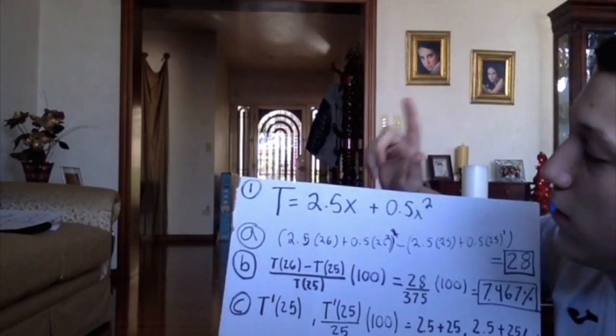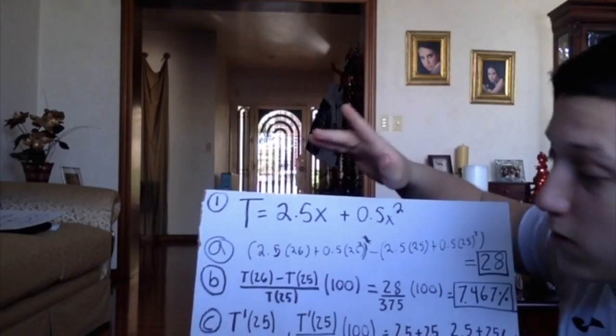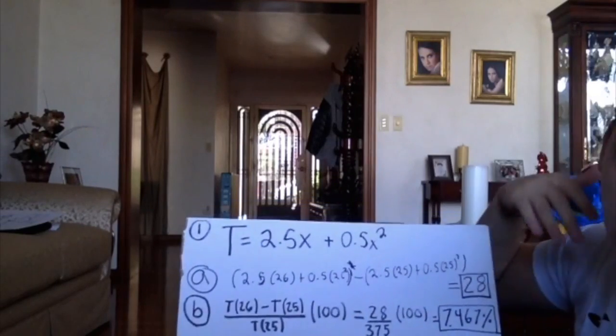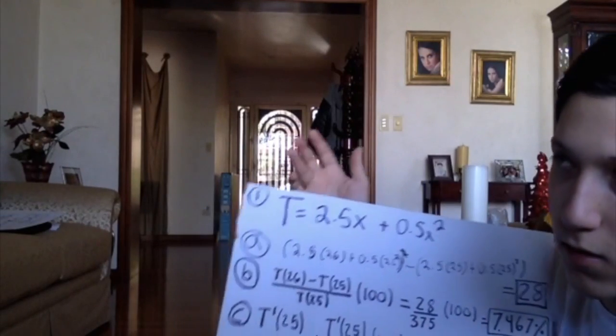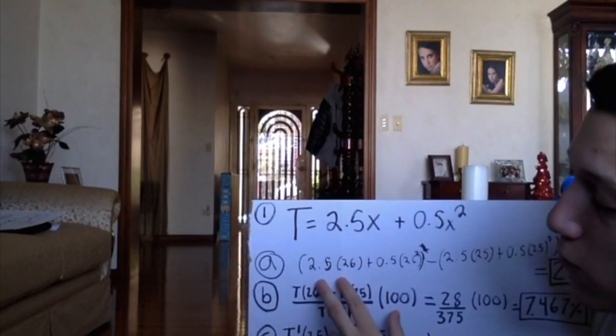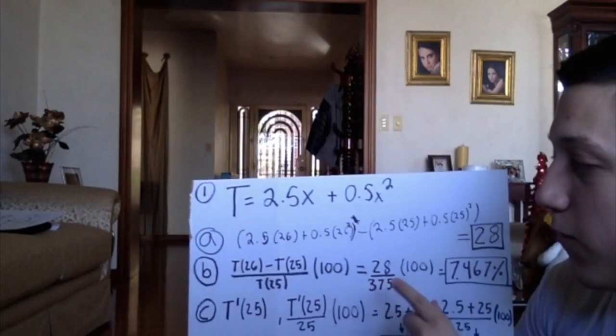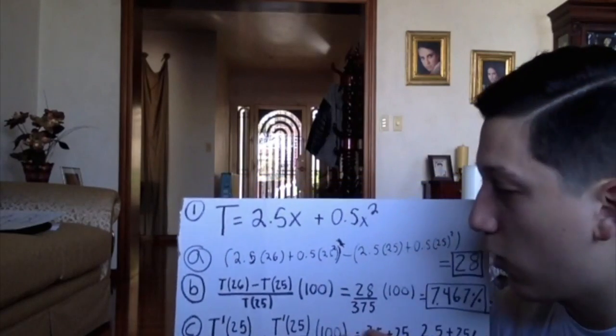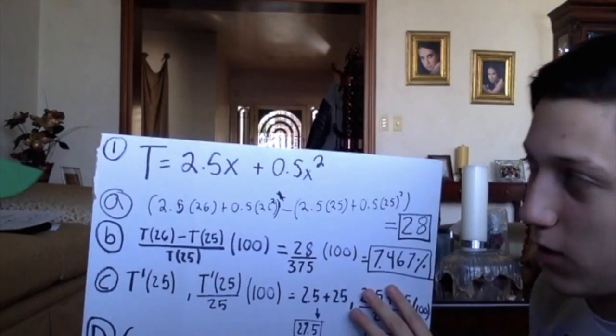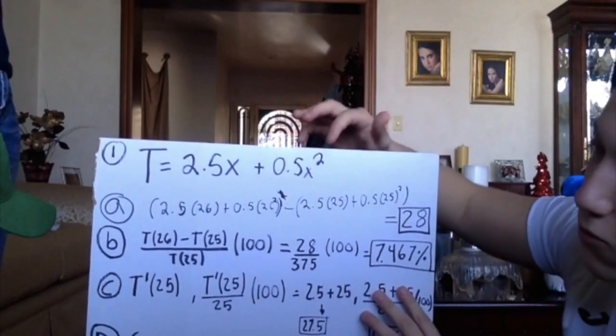So the first thing we need to do to get the change is get t with 26 because it's the x2, which will be 2.5 times 26 plus 0.5 times 26 squared. And then that will be subtracted with t25 because 25 is x1.